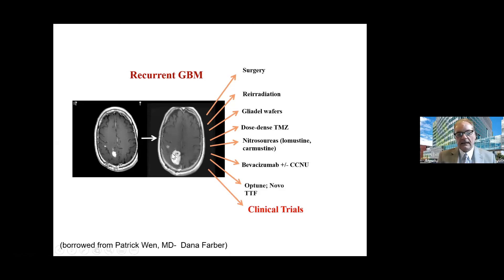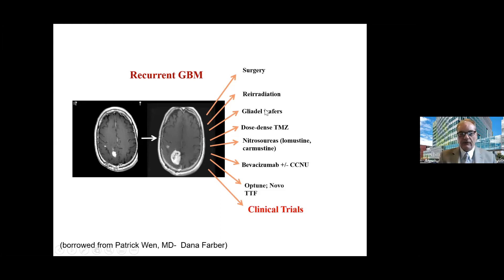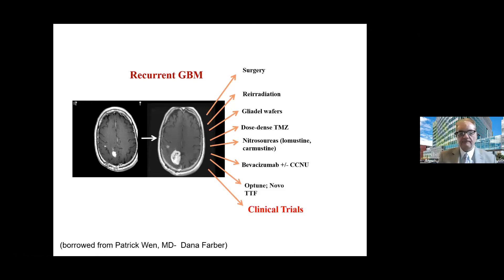When it comes back, that's when we get together and say, what do we do now? You can do more surgery. There are re-irradiation protocols. If you didn't have the wafers the first time, maybe you put them in the second time. More temozolomide, other drugs like lomustine or carmustine, bevacizumab plus lomustine, or if you didn't have tumor treating fields, you can go back on that. But really the plea here is clinical trials — we need clinical trials because we just don't know how to cure these yet.